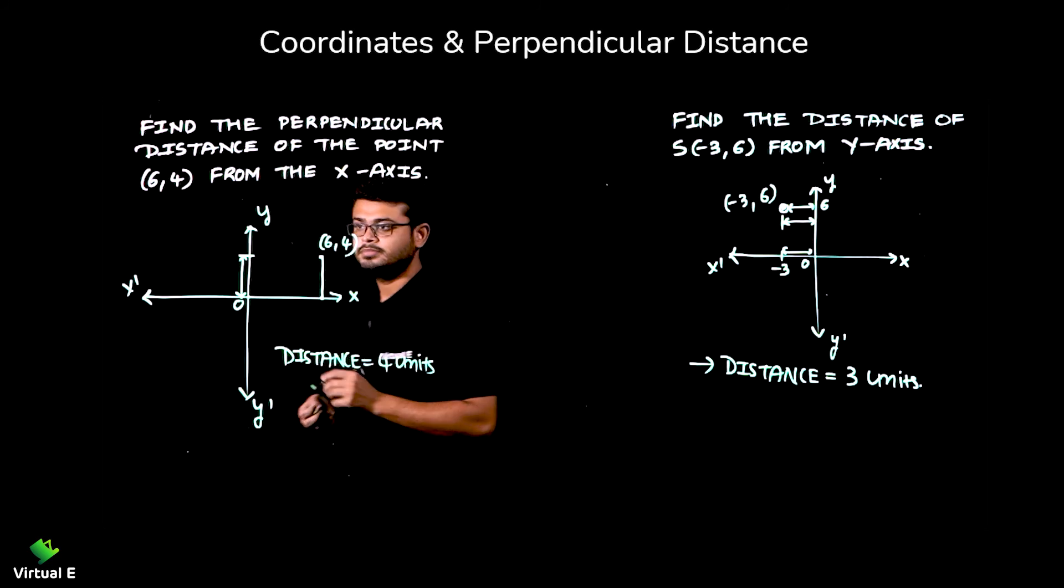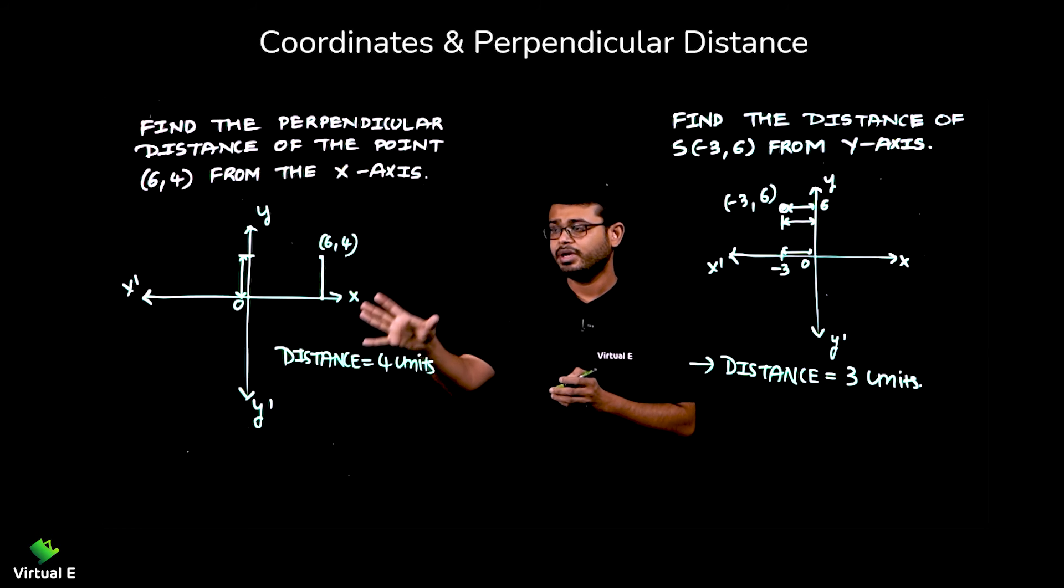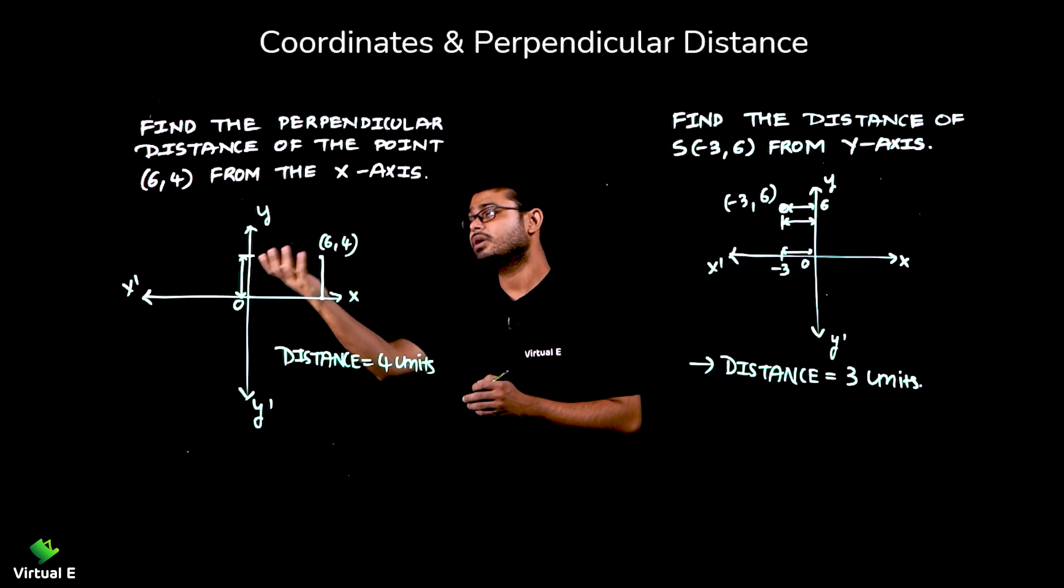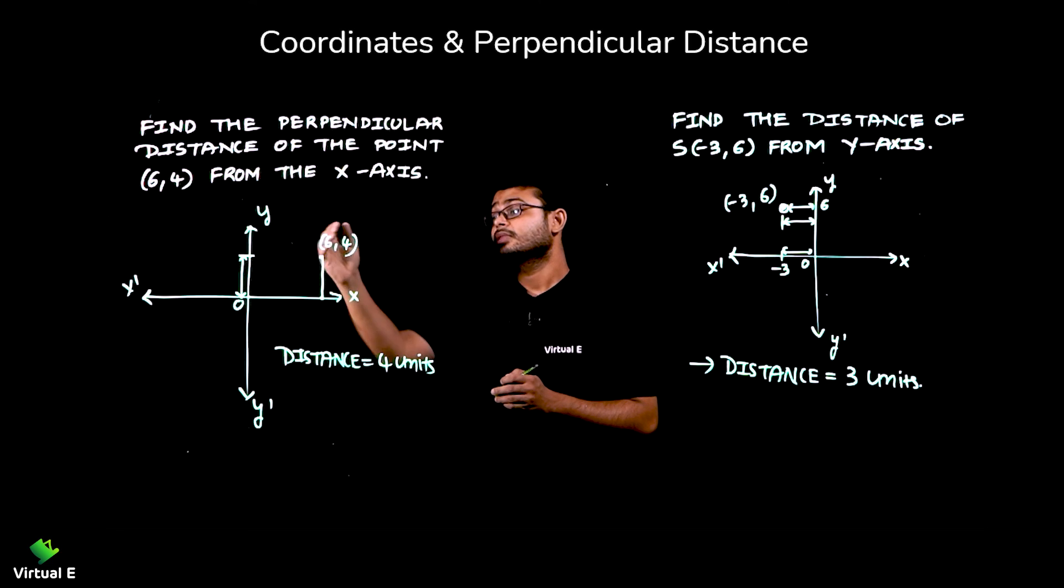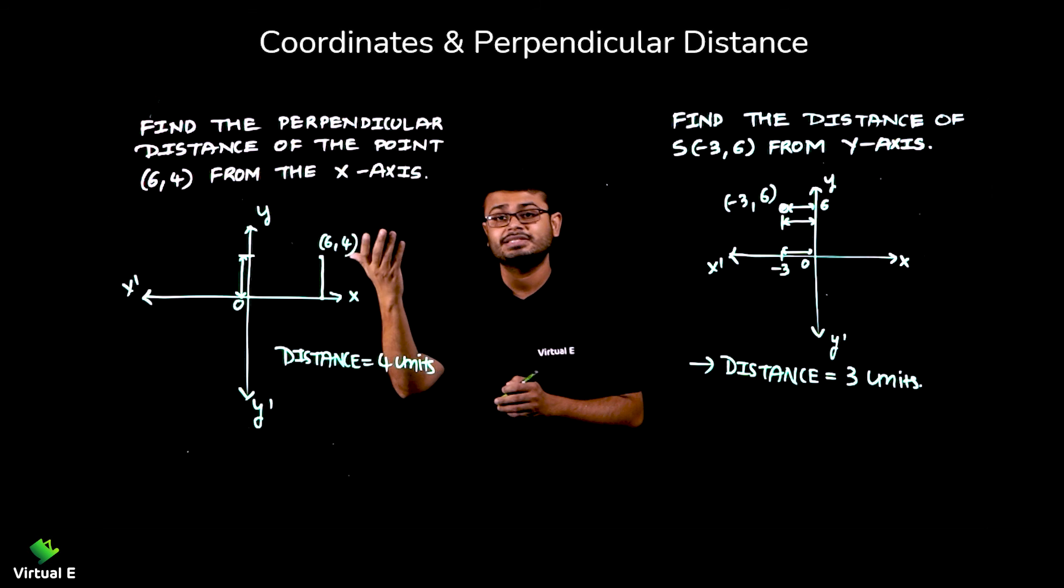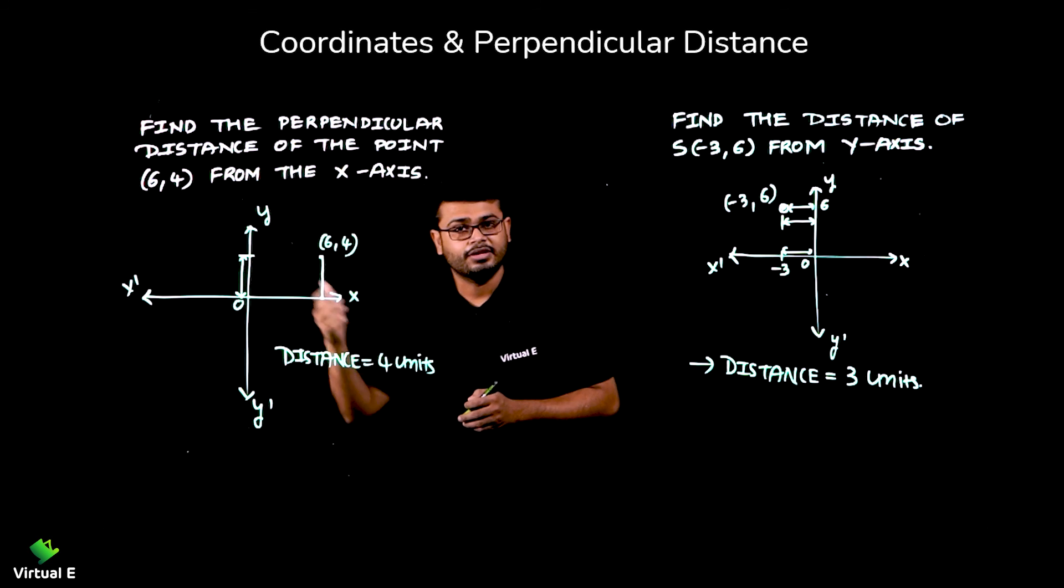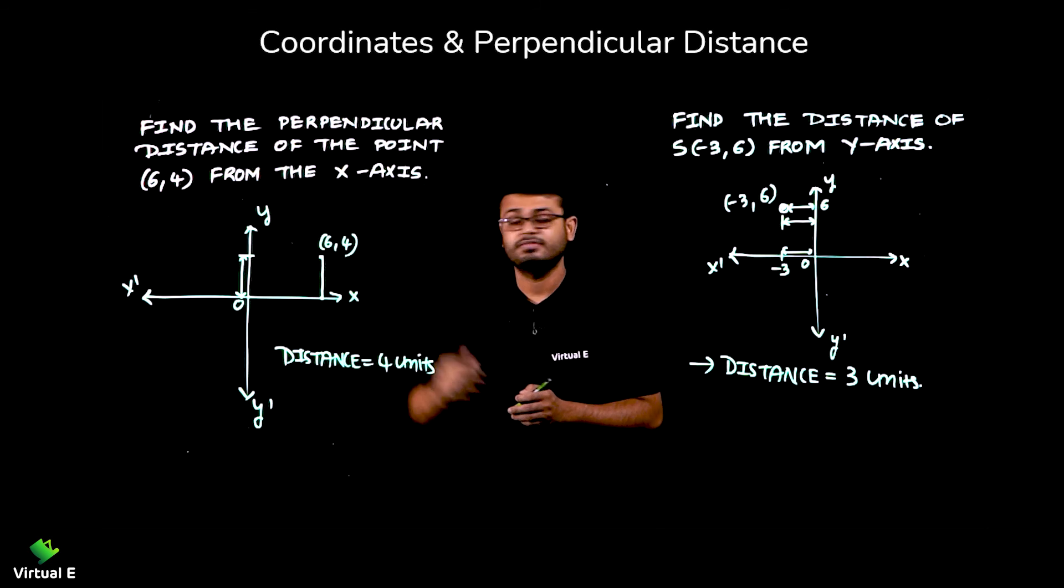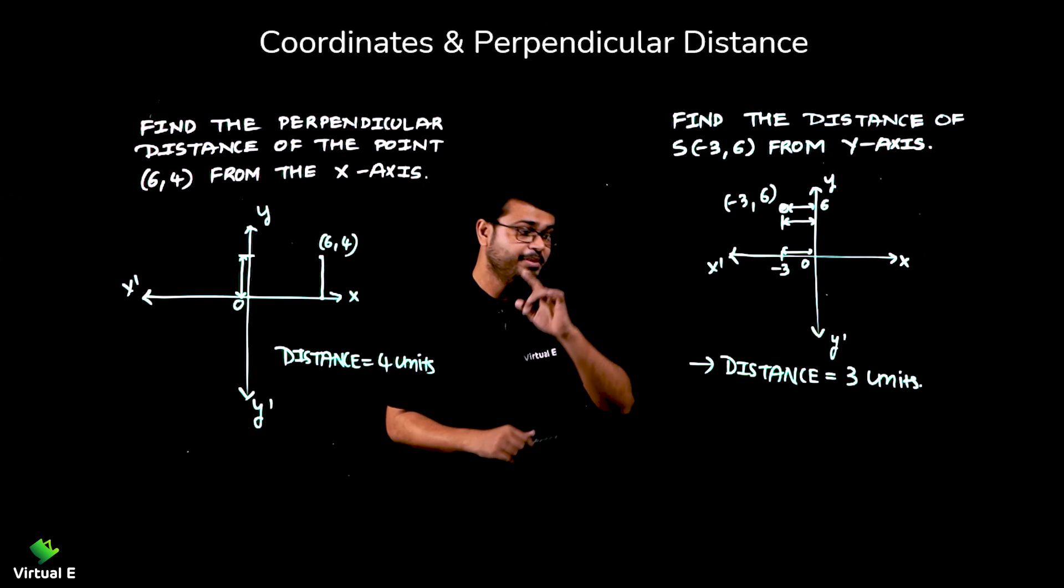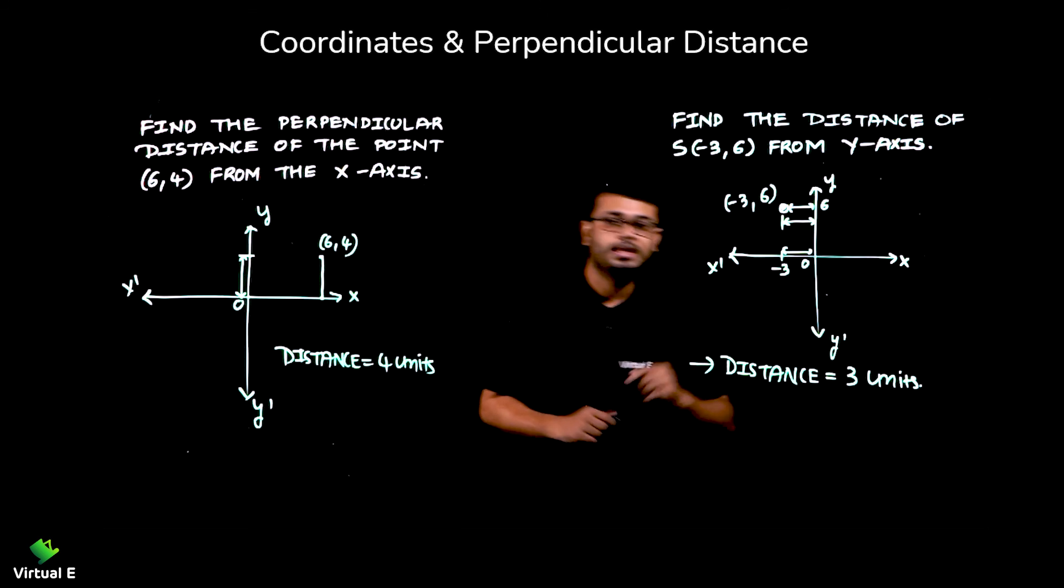Now, see over here that I have tried to plot the points. That we'll learn later as well. But I want you to understand this as well that perpendicular distance from the y-axis is the x-coordinate, and from the x-axis is the y-coordinate. But remember, distance cannot be negative.